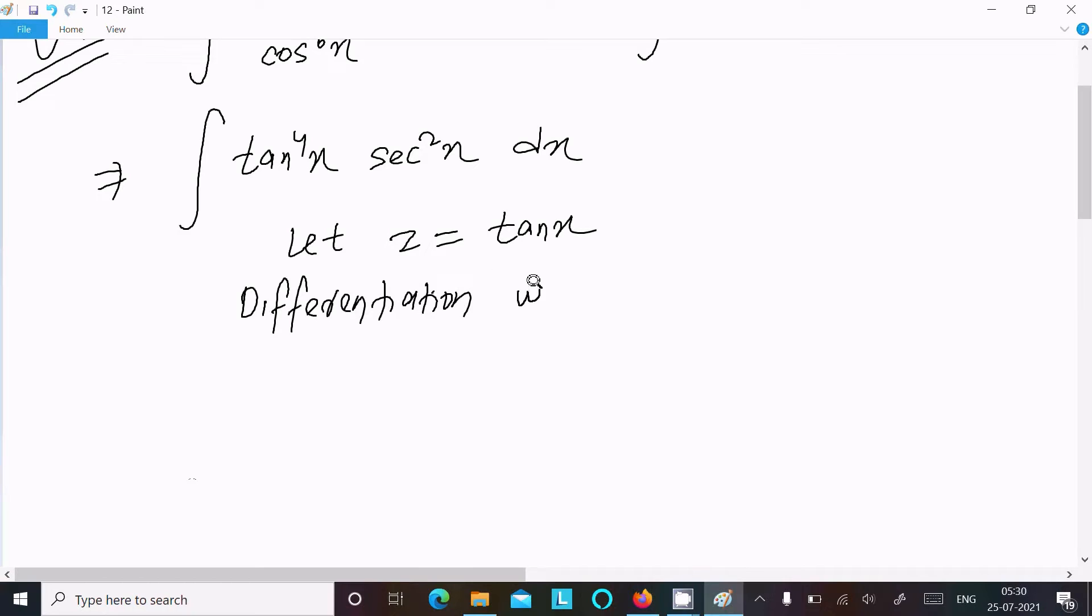Differentiation with respect to x. So here dz by dx equal to sec²x. Or we can write dz equal to sec²x dx.